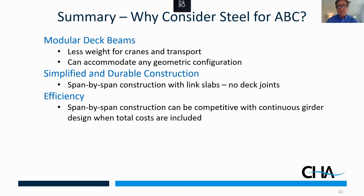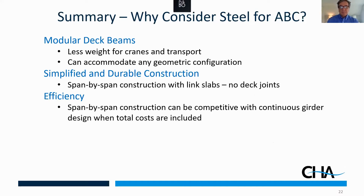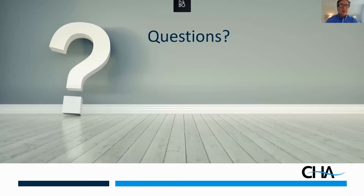In summary, why consider steel for ABC? It's lighter — and in ABC, the weight of elements is everything. Span-by-span construction is simple and durable; Link Slabs make that possible. And span-by-span construction can be competitive when compared to continuous designs when you look at the total project cost, not just the steel. Thank you for your time, and I'd be happy to answer any questions in the chat box.